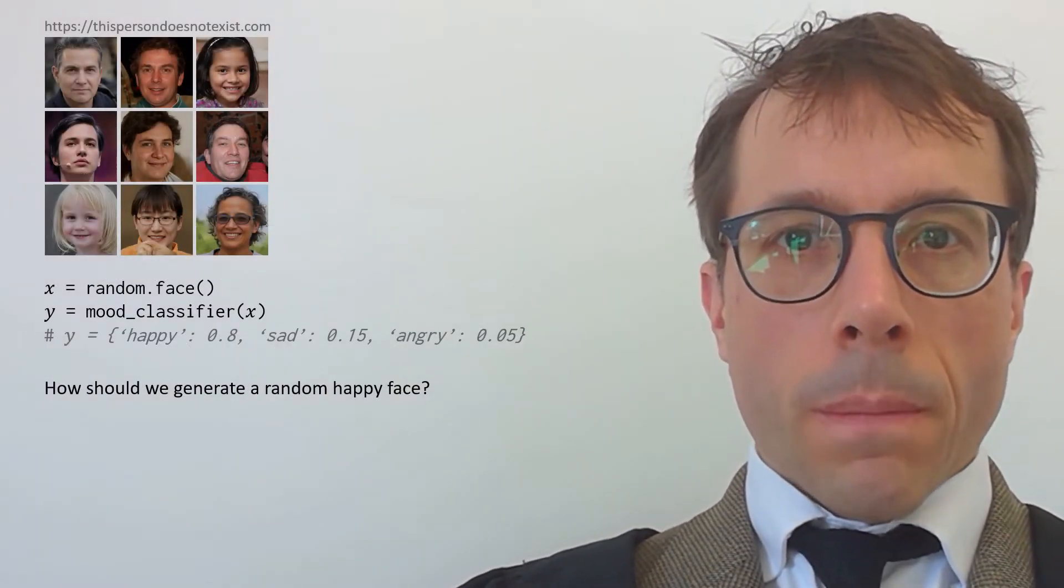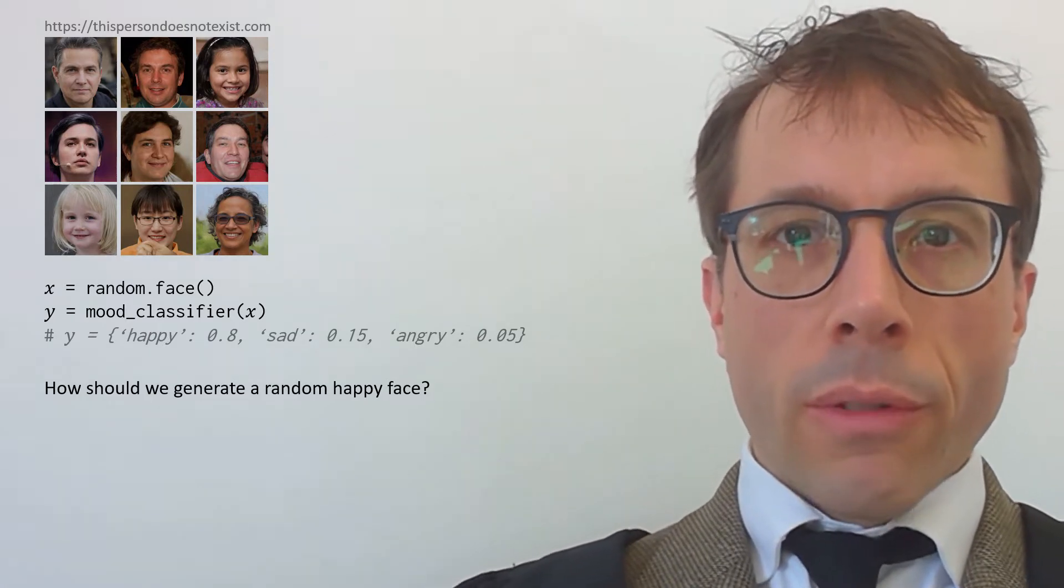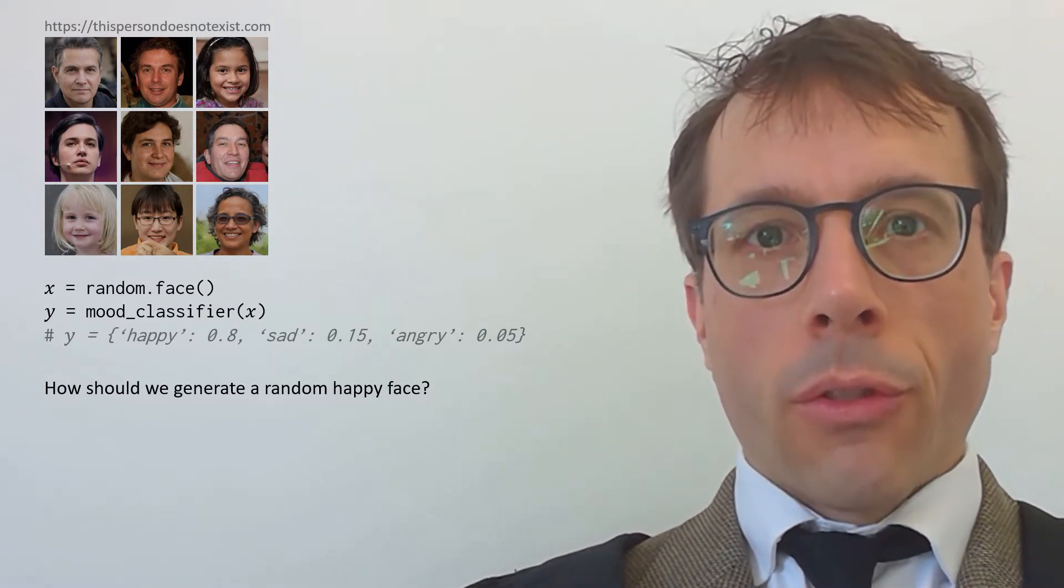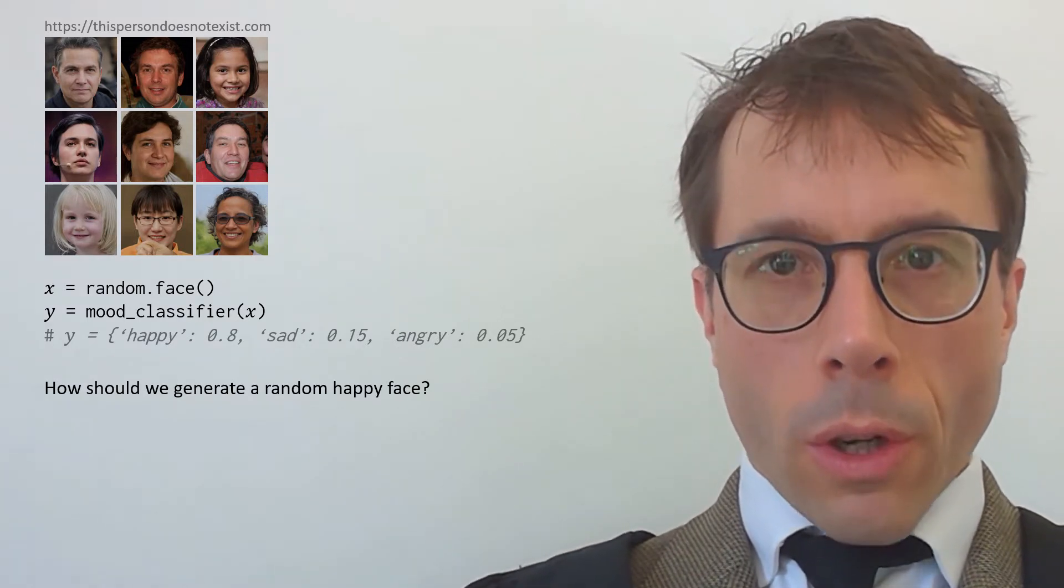Here's a probability question. Let's suppose we have a piece of code that can generate a random face. These are some random faces generated by the lovely site thispersondoesnotexist.com.